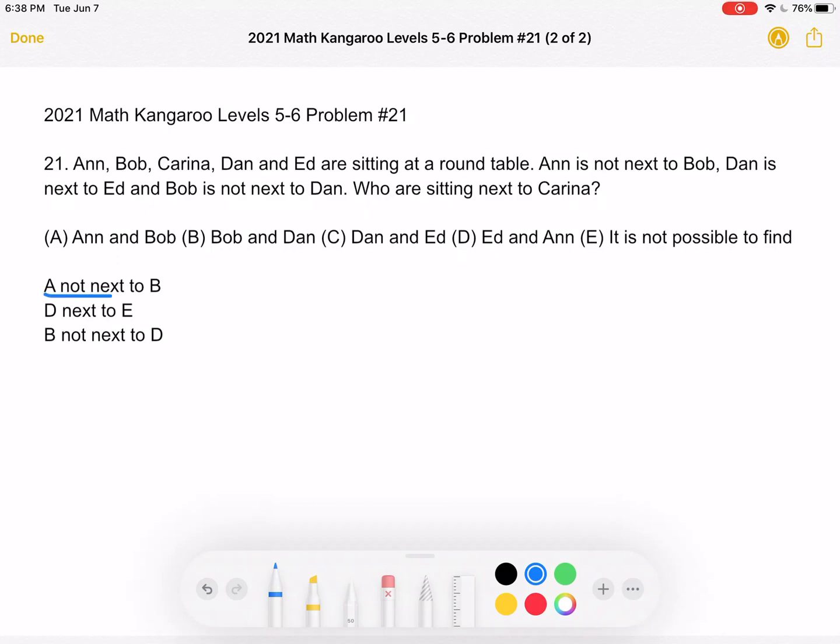So we know that A is not next to B, D is next to E, and B is not next to D.